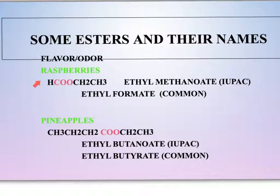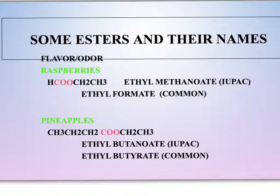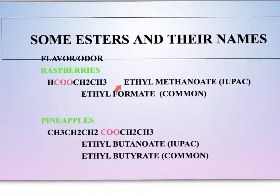Going over a few additional examples. On this one, this carbon would be double bonded to this oxygen, and this carbon would be single bonded to this oxygen. We do the single bond portion first — that's one, two — so we call that ethyl. Then we have this carbon double bonded with no other carbons, so it's a one-carbon area with an OATE ending: methanate. The name for that chemical would be ethyl methanate.